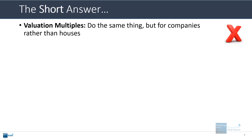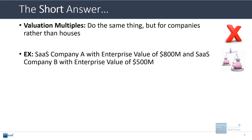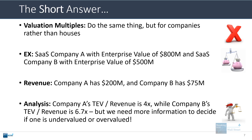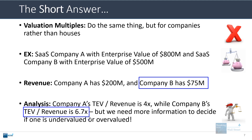Valuation multiples do the same thing but for companies rather than houses. They normalize for size differences to see at a quick glance which is cheaper or more expensive. For example, a SaaS company with an enterprise value of $800 million and $200 million of revenue has a 4x revenue multiple, while another with an enterprise value of $500 million and $75 million of revenue has a 6.7x multiple. On the surface, the second company seems more expensive, but we need more information to decide if it's undervalued or overvalued.